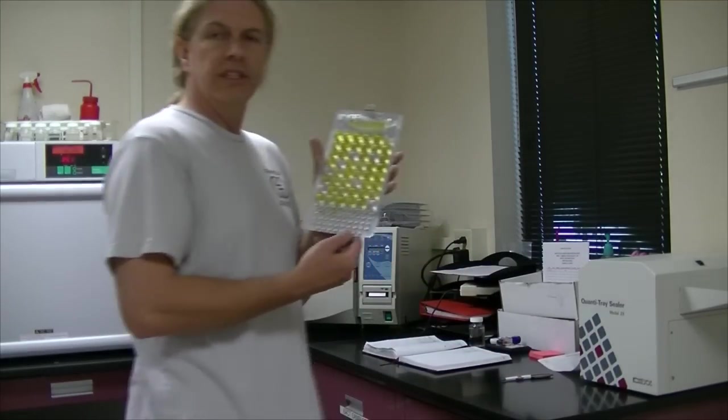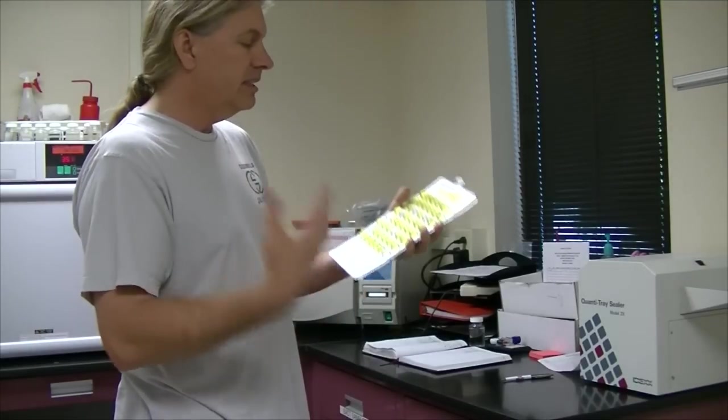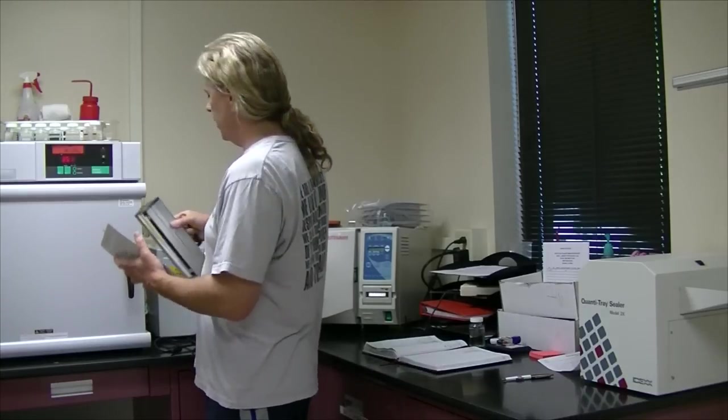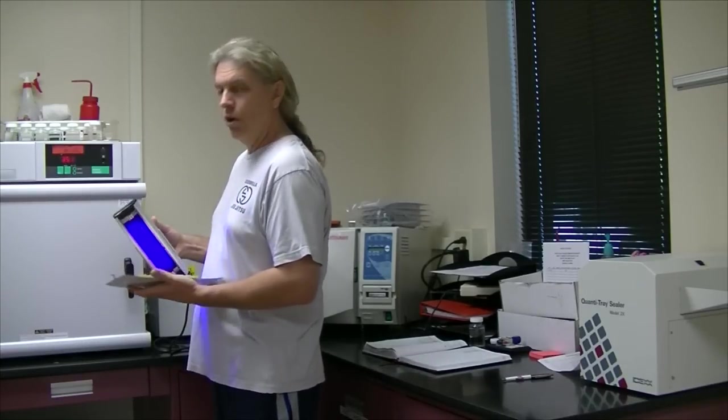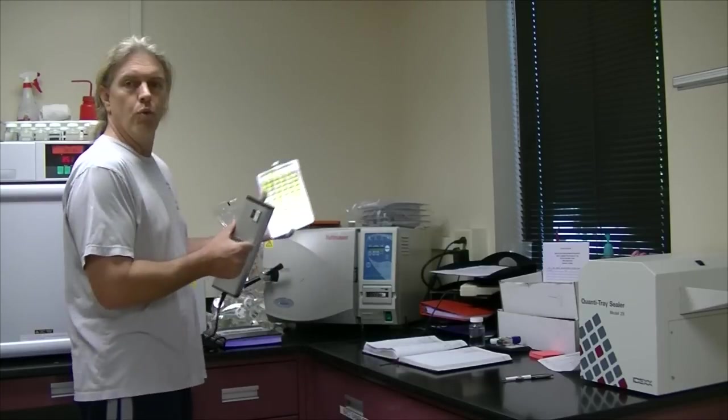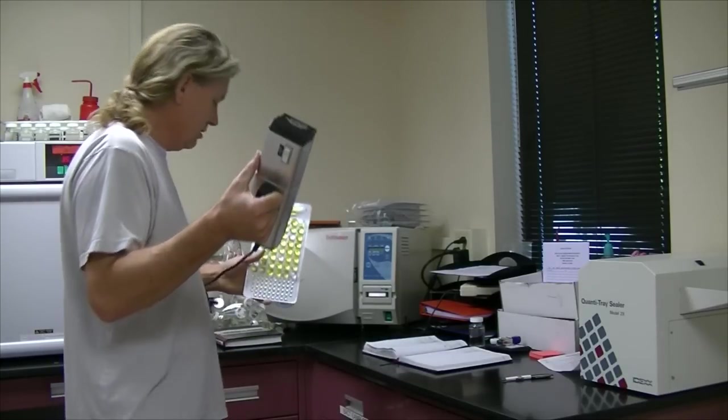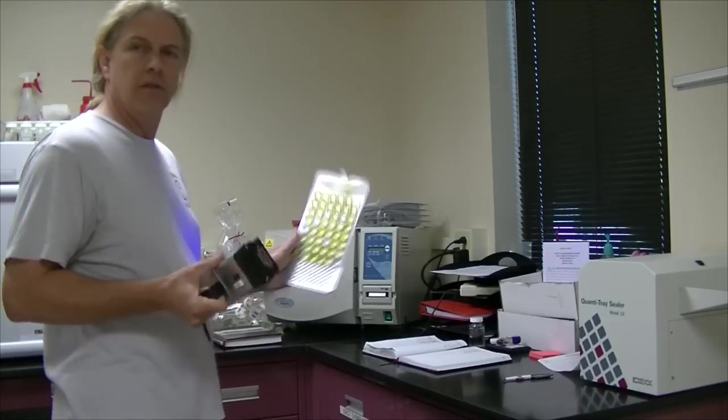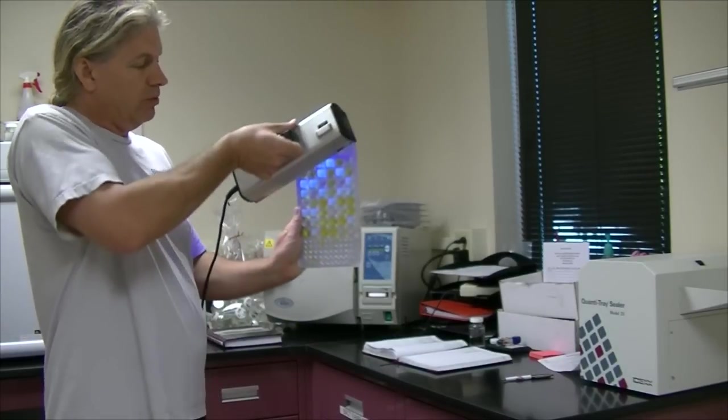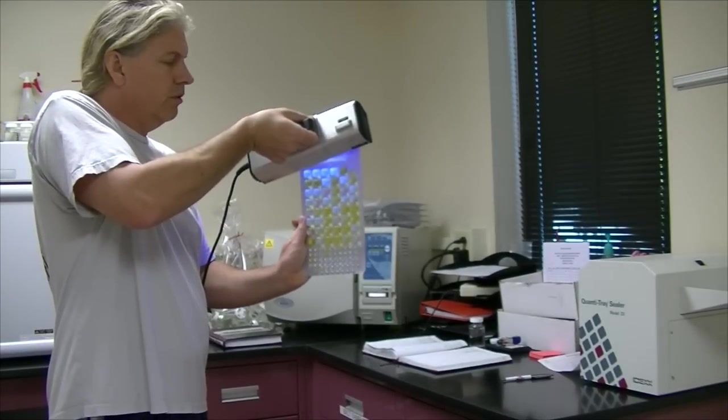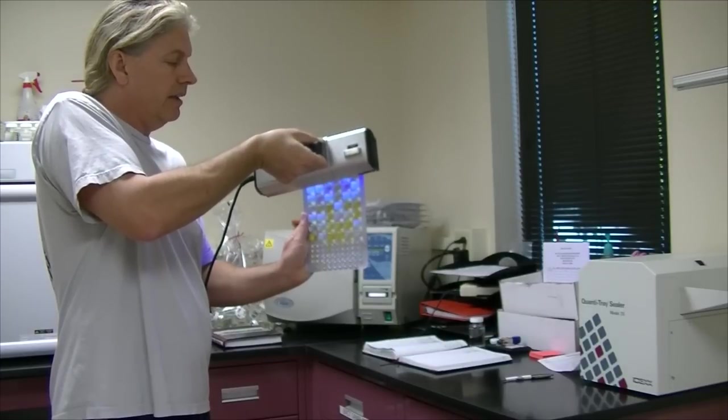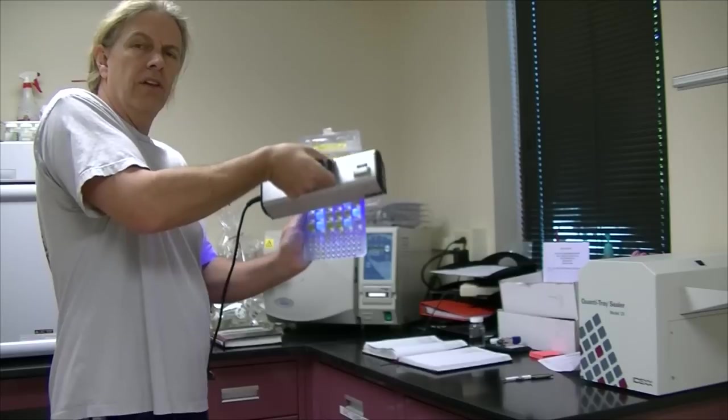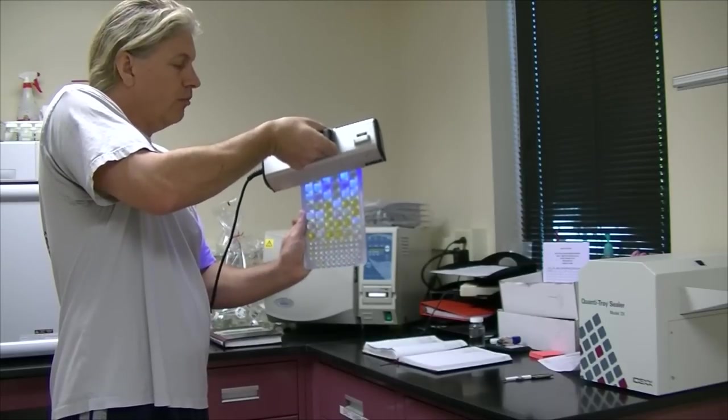Now you can also use this same tray to see E. coli. We add a UV light to that. And under UV light, the E. coli will, let me see how close I can get this, under a direct UV light, the E. coli will show up as white. So you put this tray, this UV light on that. The coliform will stay yellow. The E. coli will show up white.